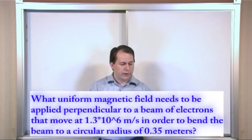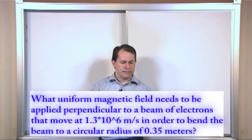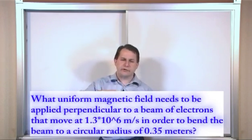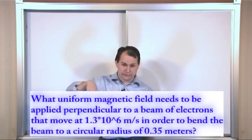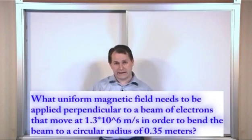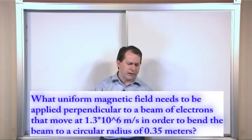Alright, that's useful to know. We know the velocity, 1.3 times 10 to the sixth, and the beam is said to go in a circular orbit, obviously because it's shot inside of a magnetic field. It's going to curve and we know the radius.